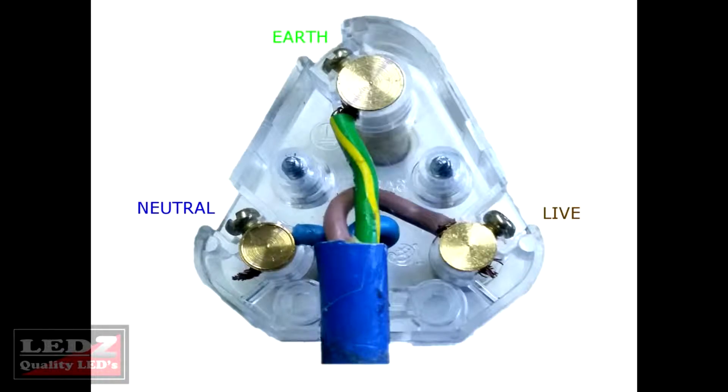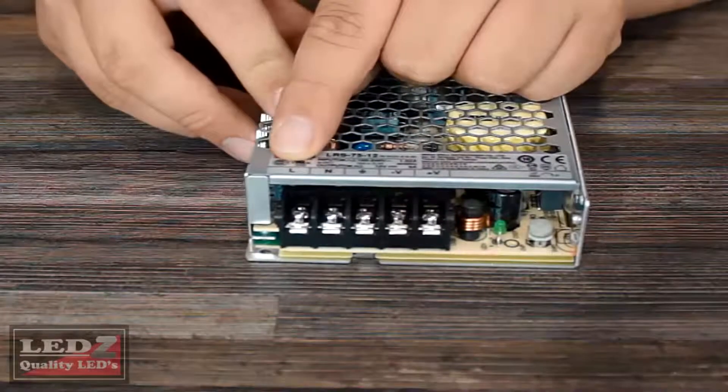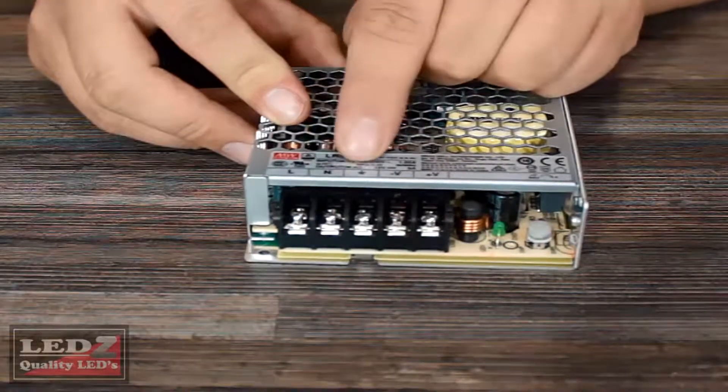As you can see from the diagram here provided, you will see that the earth is on the top, the neutral is on the left, and the live is on the right on the plug. Now go ahead and loosen the screws for the live, the neutral, and the earth.